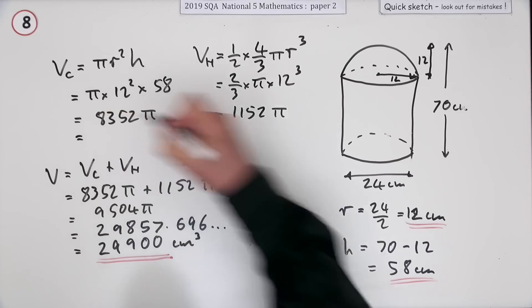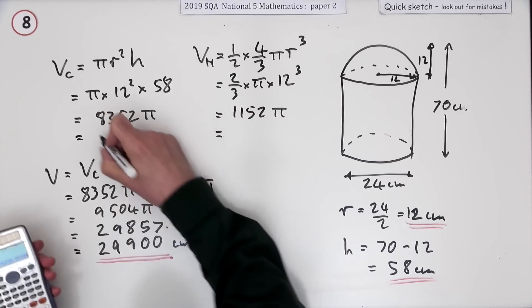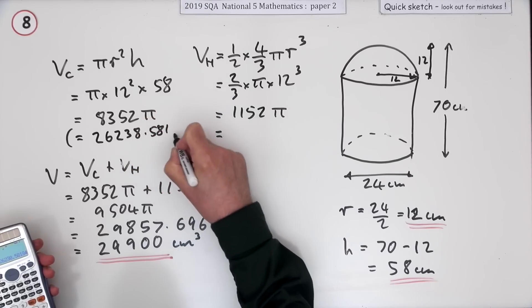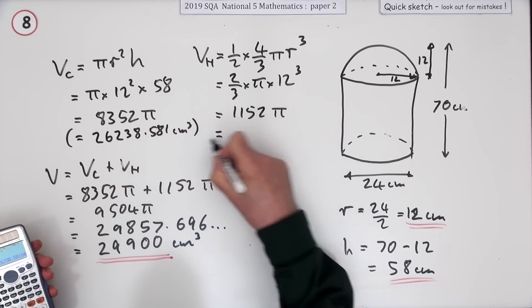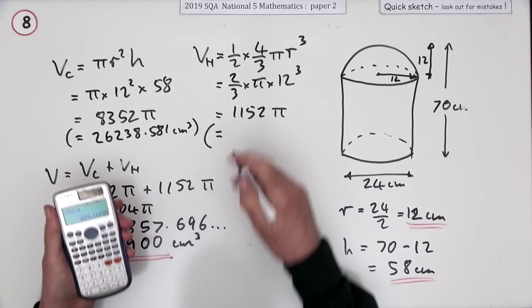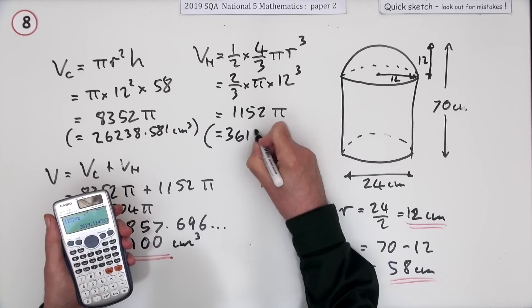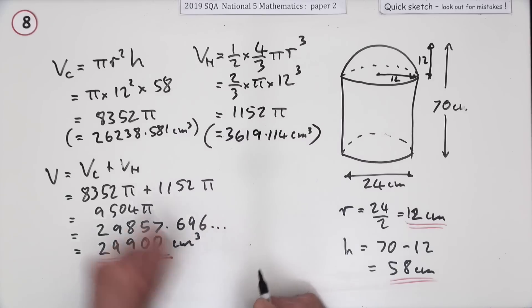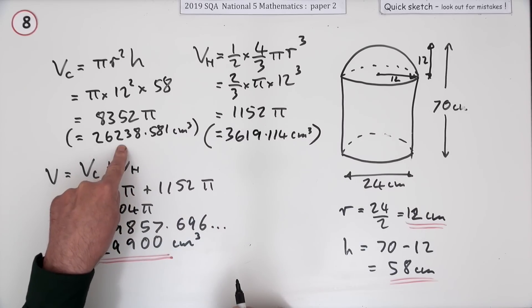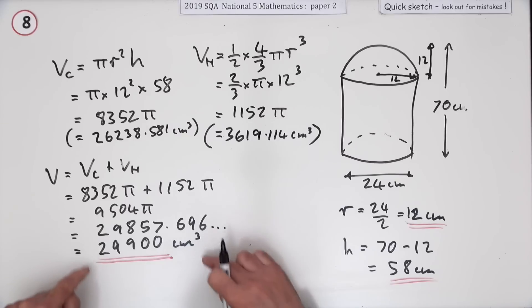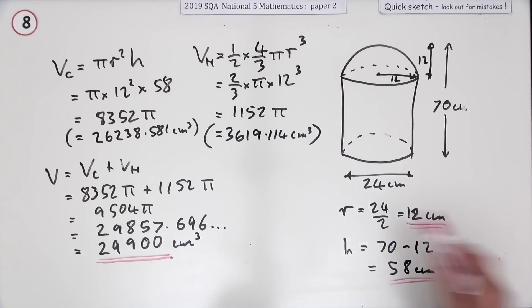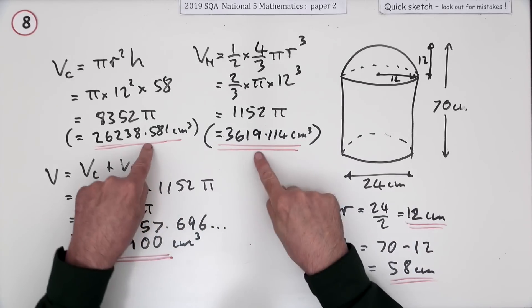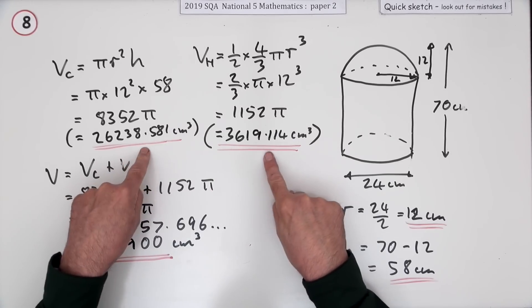That should be centimeters cubed. However, I'll just put down what those would be anyway. That was 26238.581 centimeters cubed, and that was 3619.114 centimeters cubed, if you care to put them down. But you shouldn't round those answers off to three significant figures. You keep them accurate and wait until the final line before you round it off. And of course, if you'd gone as far as the decimals, that line would have been replaced just by the sum of those two numbers.